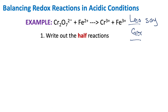If we take a look at this iron over here, we're going from iron 2+ to iron 3+. So iron is becoming more positive. If we're becoming more positive, that means we're losing electrons. If you're losing electrons, you're oxidizing — that's LEO. So we must automatically assume that this chromium compound must be reduced.